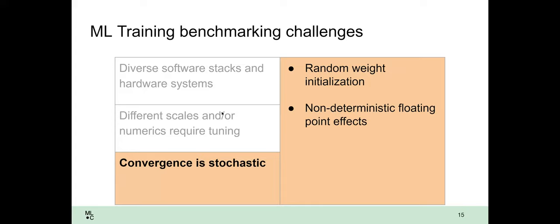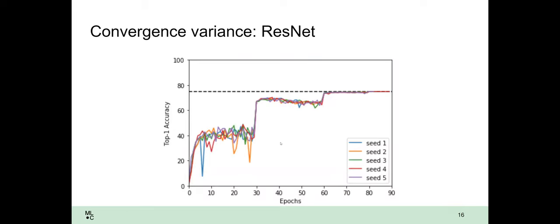And then the last thing that I mentioned before is convergence is stochastic. Typically when you train, you will initialize with random weights. That random weight initialization can have a pretty big impact. Anecdotally, I can say, I've seen cases where performance is varied by 20% run to run due to weight initialization. So you can get lucky. You can get really lucky. And that makes benchmarking hard. So there's a lot of things that make ML training just really tough to tackle.